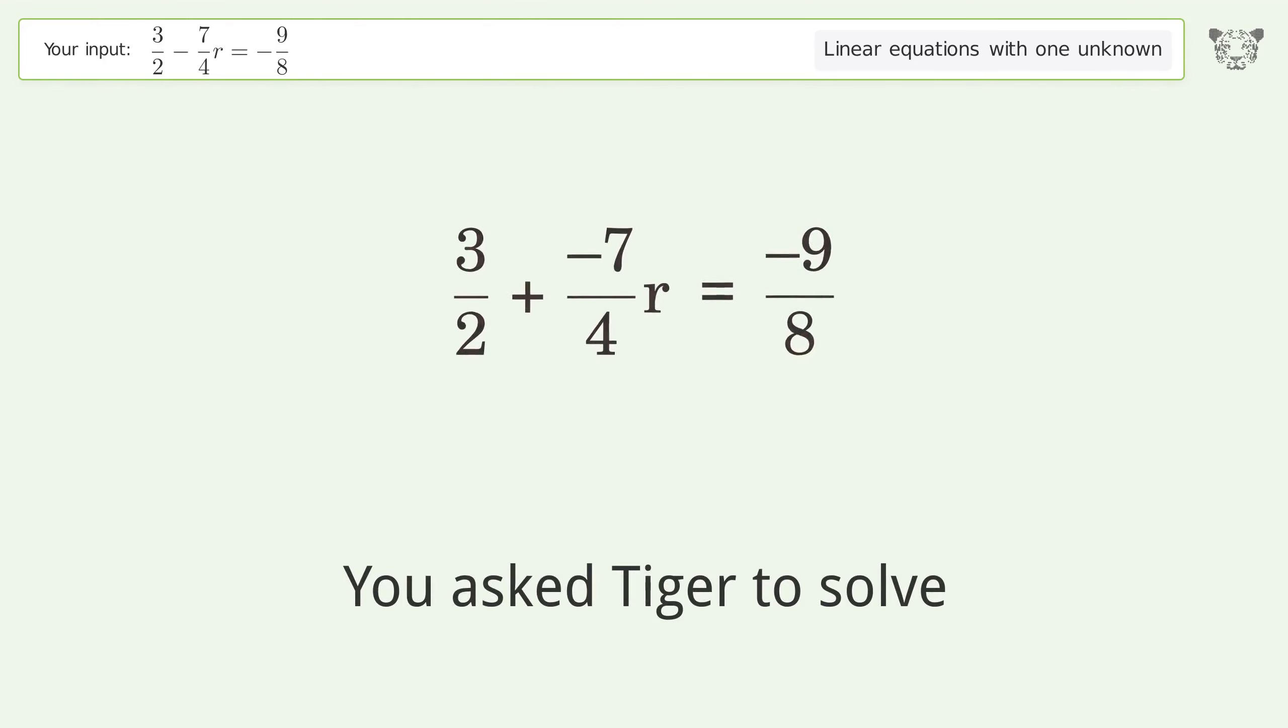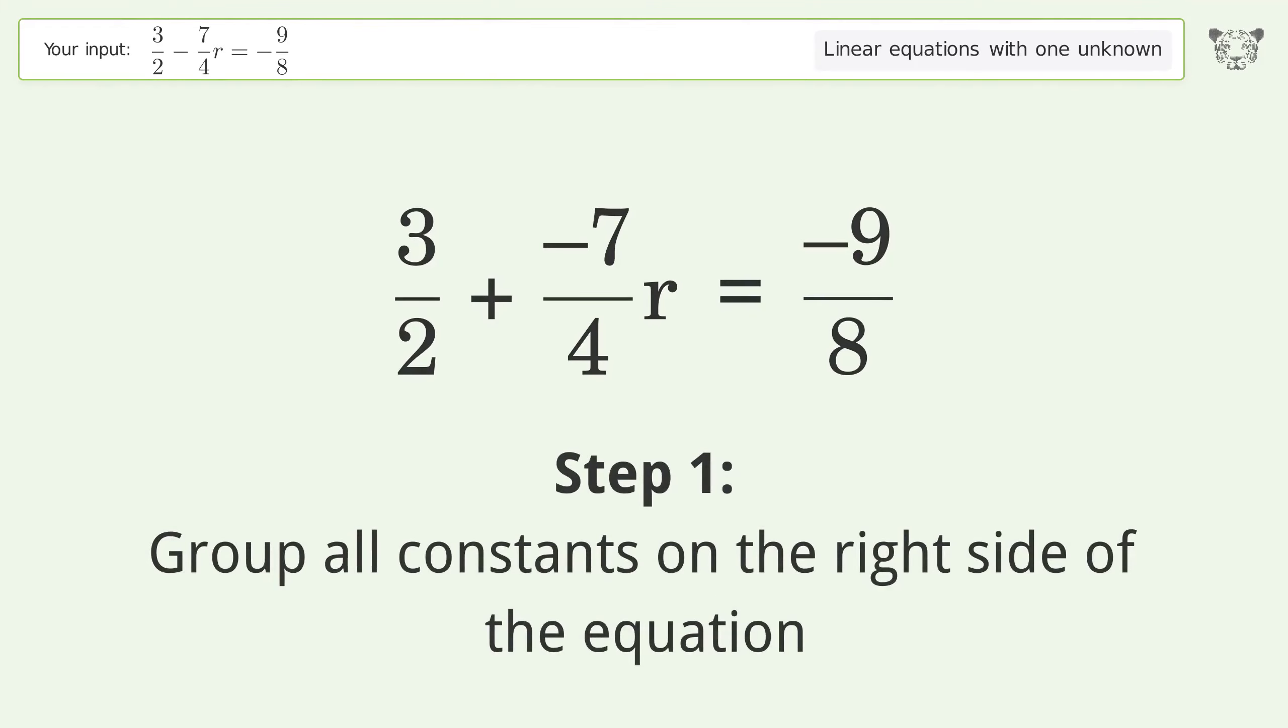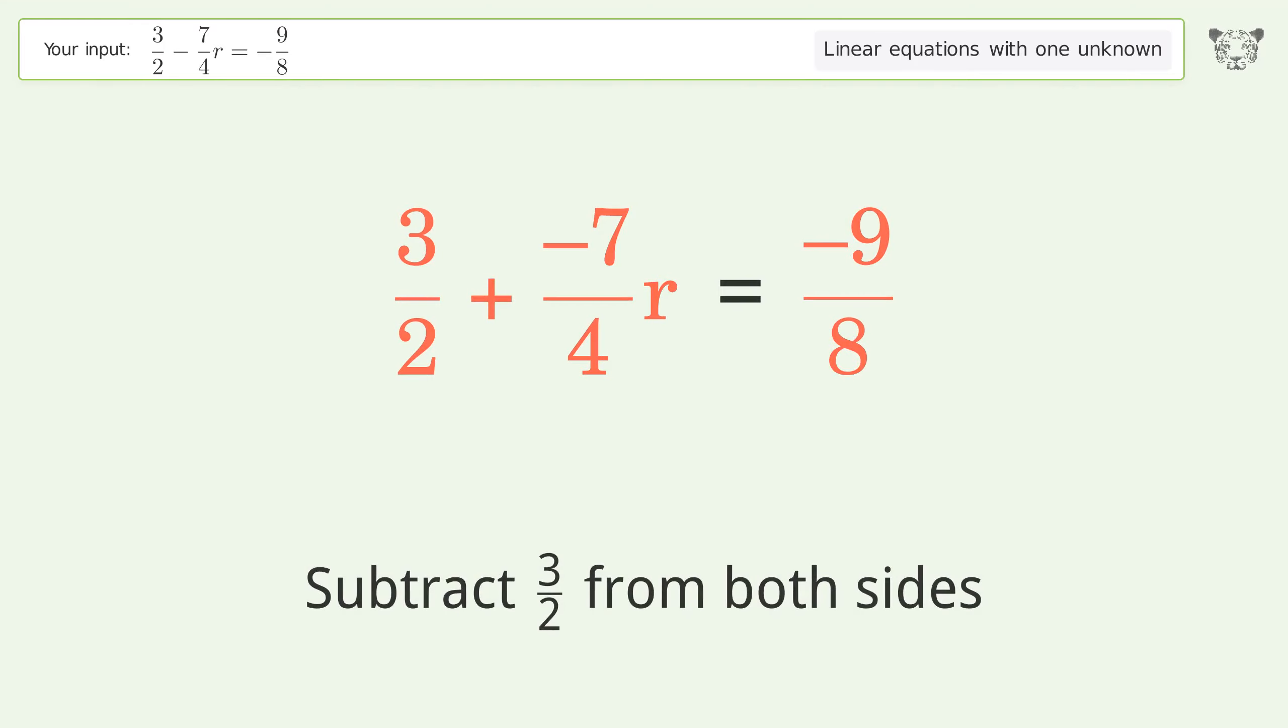You asked Tiger to solve this problem dealing with linear equations with one unknown. The final result is r equals 3 over 2. Let's solve it step by step. First, group all constants on the right side of the equation. Subtract 3 over 2 from both sides.